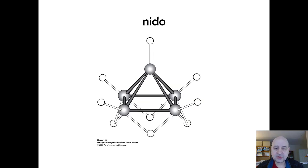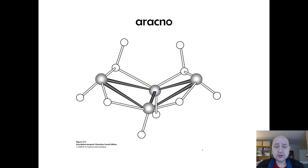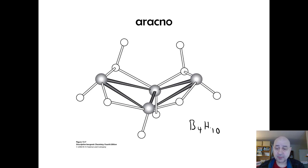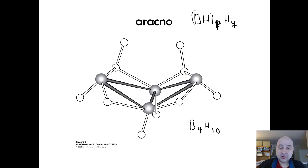Looking at a nido structure: this is B5H9 — five plus four equals nine hydrogens. The completely open arachno structure here is B4, giving ten hydrogens total. P is the number of BH units and Q is the number of additional hydrogens. For B4 arachno, we take four terminal BH units and add six extra hydrogens.